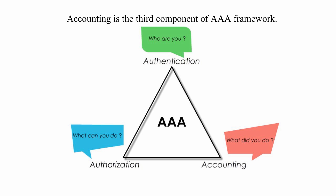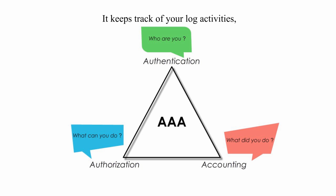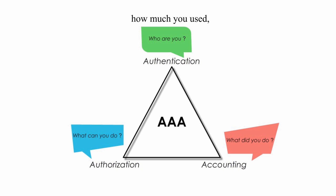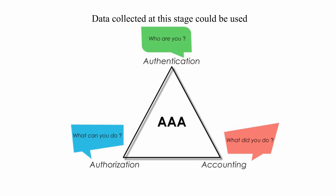Accounting is the third component of AAA framework. It keeps track of your log activities, which may include what resources you used, how much you used, how long you used, and so on. Data collected at this stage could be used for controlling, monitoring, billing, statistics, and so on.